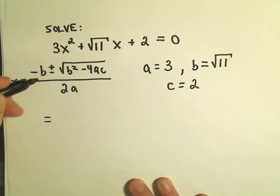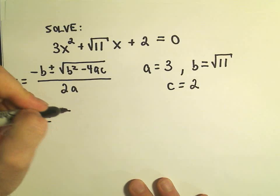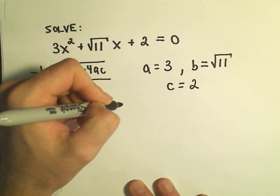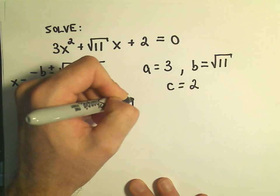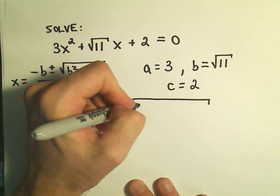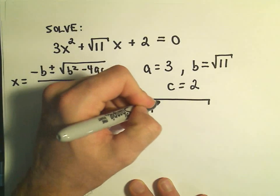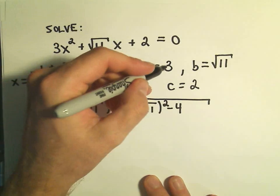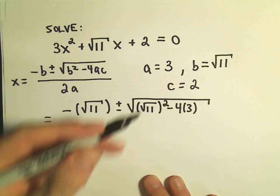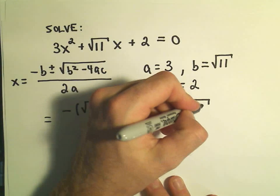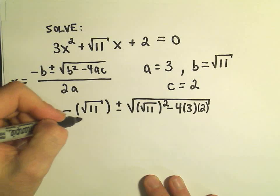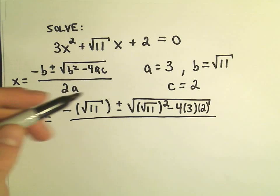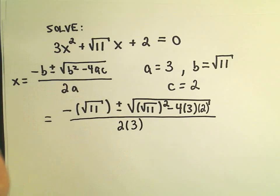If we plug all of this into our quadratic formula, we get negative b, which is negative the square root of 11, plus or minus the square root of b — which is the square root of 11 — squared, minus 4 times a, which is positive 3, times c, which is positive 2. We divide all of that by 2 times the a value, so 2 times positive 3.